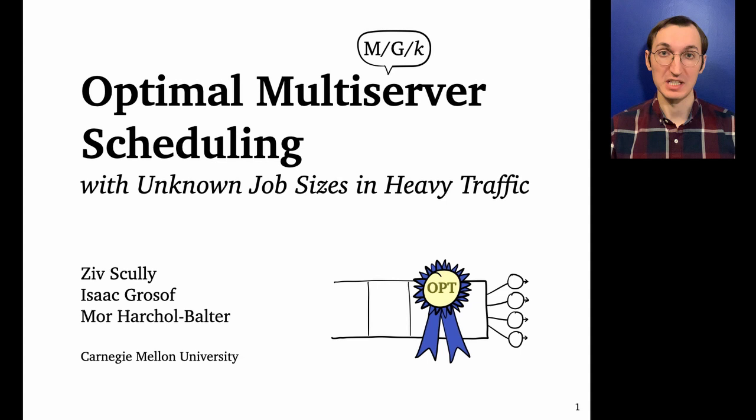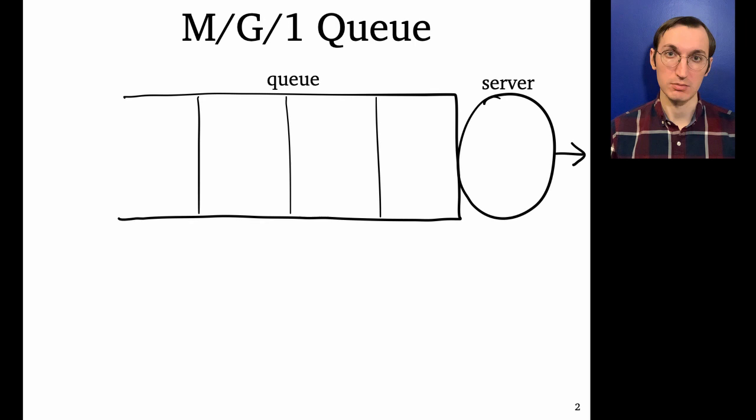So today's talk is going to be about the M/G/k queue, which is a multi-server queuing model. I'm going to start by introducing its single-server version, the M/G/1. So in the M/G/1, we've got one server which can serve a job at a time and a queue that can hold any number of waiting jobs.